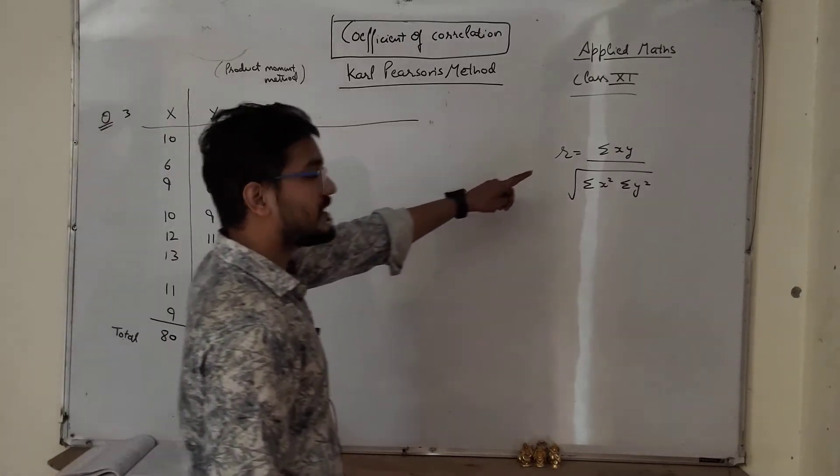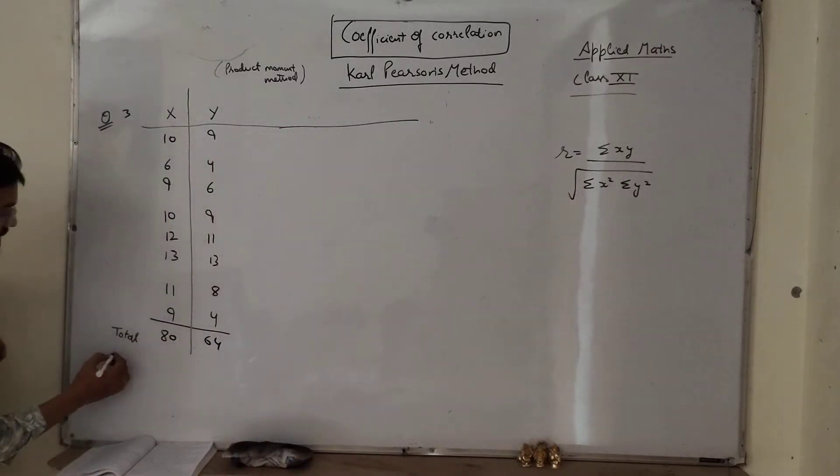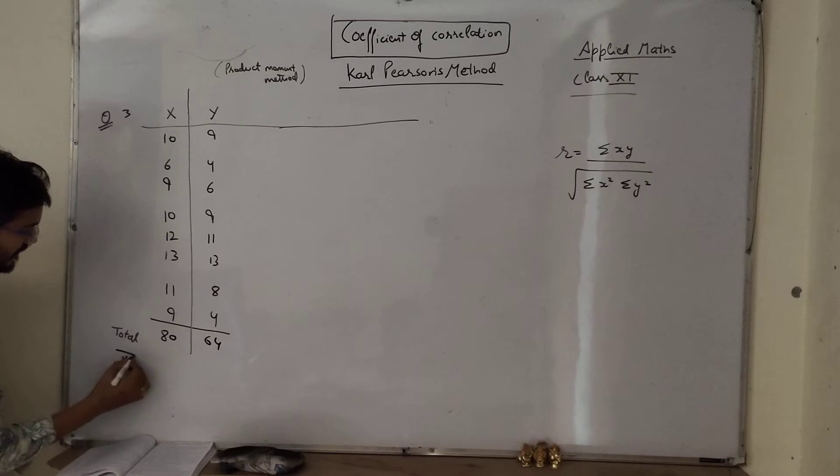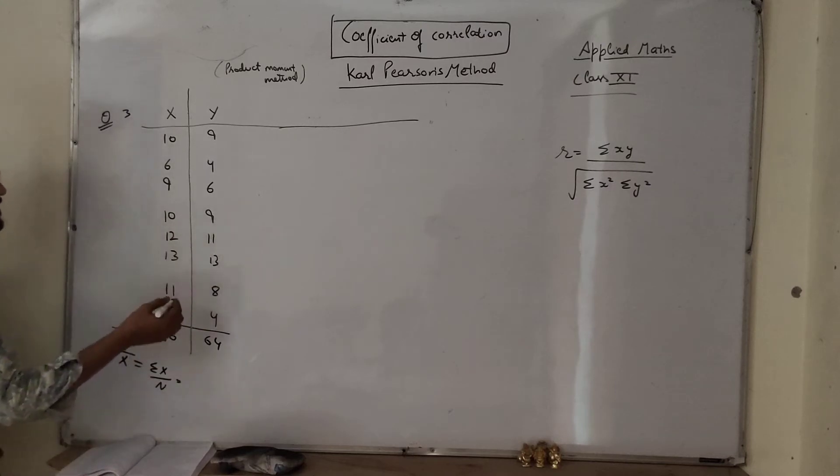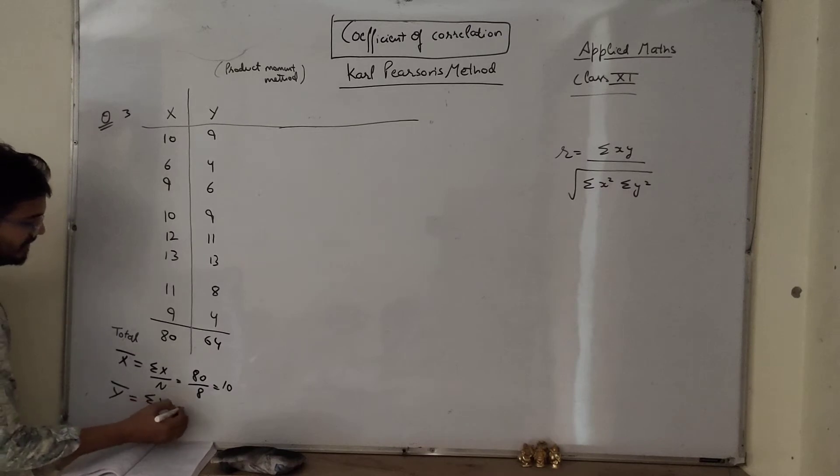So before getting its value, just determine mean. So mean x bar or capital X bar, x bar equals sigma x upon n, total number of terms sigma x 80 upon 8 which is 10. Similarly y bar equals sigma y upon n, 64 upon 8 which is 8.